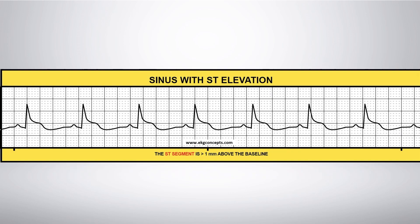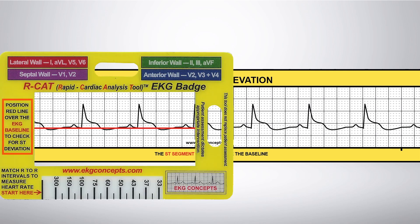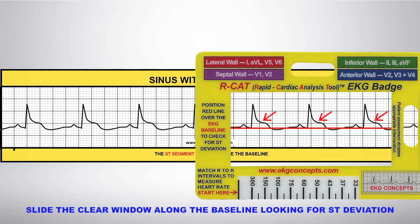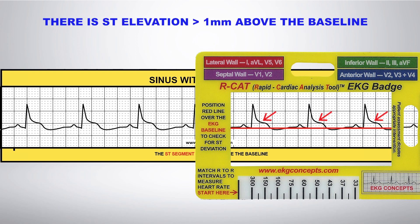Slide the red line of the EKG badge on the baseline and look for ST deviation. Notice how the S wave does not come down to the baseline and the S wave and T wave come together to form ST elevation. Here you see ST elevation greater than 1 mm above the baseline.